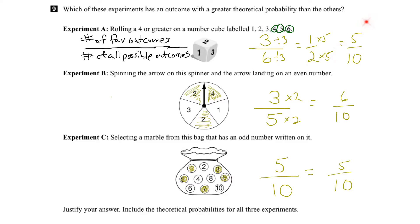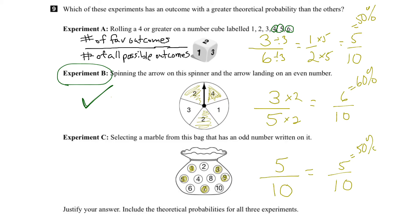Comparing these theoretical probabilities, the greatest is 6 tenths, so experiment B is more likely to happen — it has a greater theoretical probability than the others. We could also convert these to percents: 5 tenths is 50%, 6 tenths is 60%, and 5 tenths is again 50%. Comparing the percentages, experiment B again has the greatest theoretical probability.